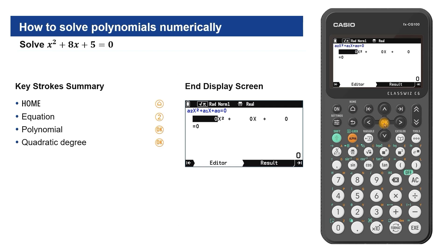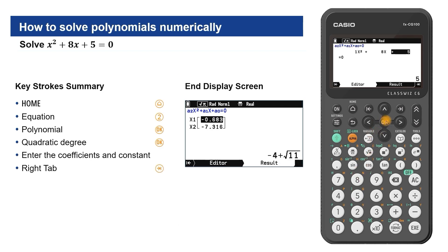The input screen shows the required format of x squared, add x, add constant, equals 0. Enter the equation coefficient and constant. Either press right tab or OK to calculate.